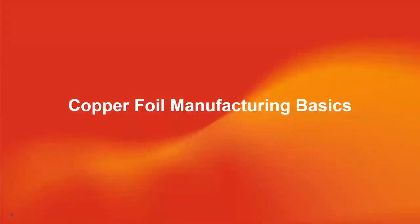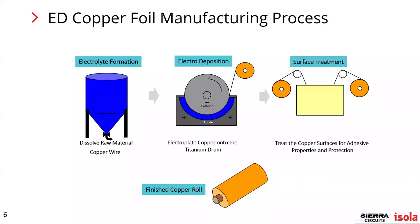Now, basic foil manufacturing. These are some diagrams to give you basic ideas of how this is done. There are three major processes: creating the electrolyte, plating on the drum, and surface treatments. They start by taking raw copper wire and creating a copper sulfate solution. One of the questions we've been getting over the last couple of years concerns the raw materials used to make laminate from a sustainability perspective.